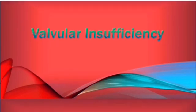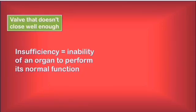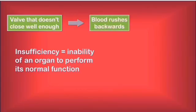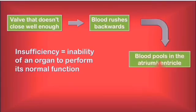Next up: valvular insufficiency or regurgitation. An insufficiency describes the inability of an organ or structure to perform its function. Considering that cardiac valves were designed to assure unidirectional flow through the chambers by closing their leaflets, a valvular insufficiency is the inability of a valve to close properly. We have a valve that cannot close the way it should, leading to backward flow of blood — either because of gravity, as in aortic valve regurgitation, or because of ventricular systole, as in mitral valve regurgitation — resulting in volume overload as the chamber involved must mobilize more blood than normal.